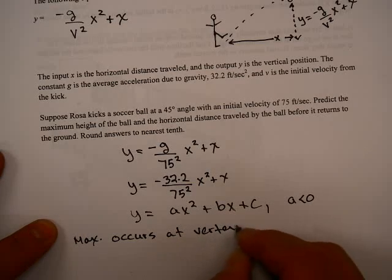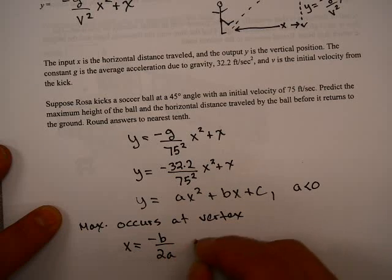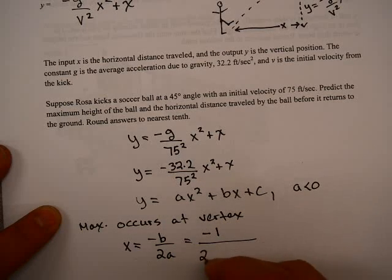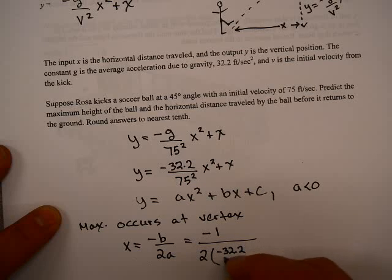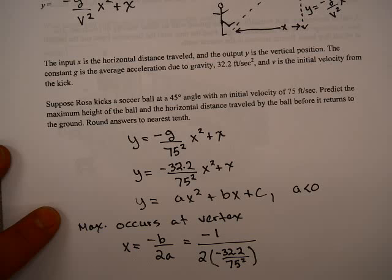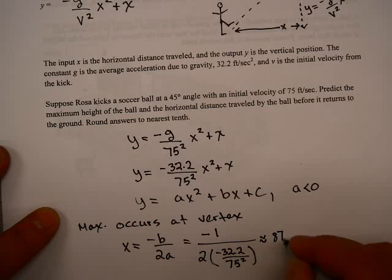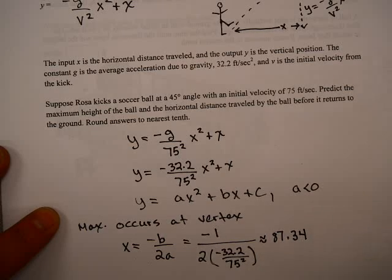It is most convenient in this case to use that vertex form -b/2a. In this case, that's -1 / (2 × -32.2/75²). Not too hard to do this. If you do this on your calculator, -1 divided by parentheses 2 times parentheses -32.2 divided by 75 squared, I get that this is approximately 87.34.